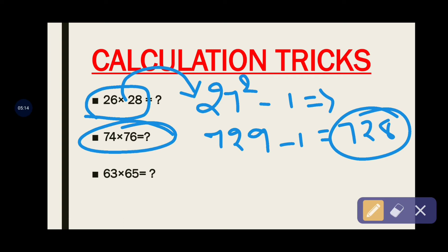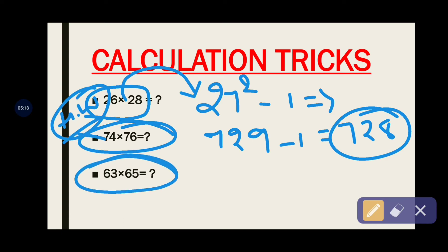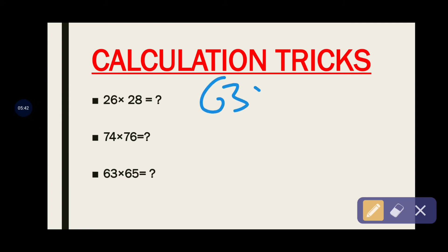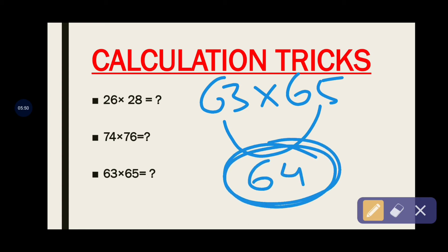74 × 76 is for your homework — please comment your answer in the comment box. Now coming to 63 × 65: I told you this works for both successive even and successive odd numbers. Some people ask if it's only applicable for even numbers — no, it is applicable for odd numbers also. The middle number between 63 and 65 is 64.